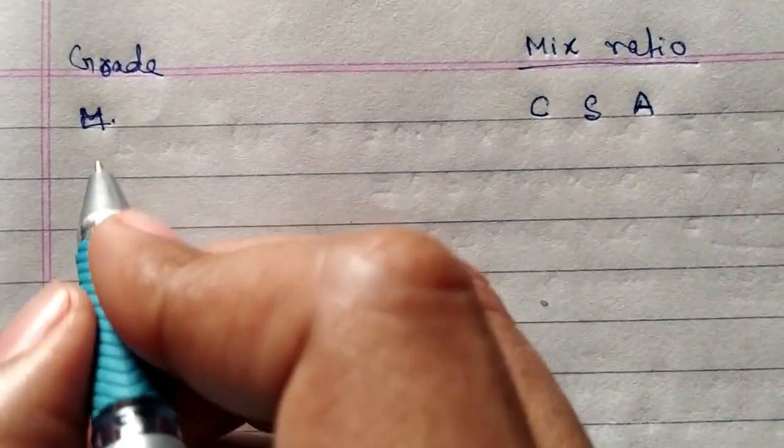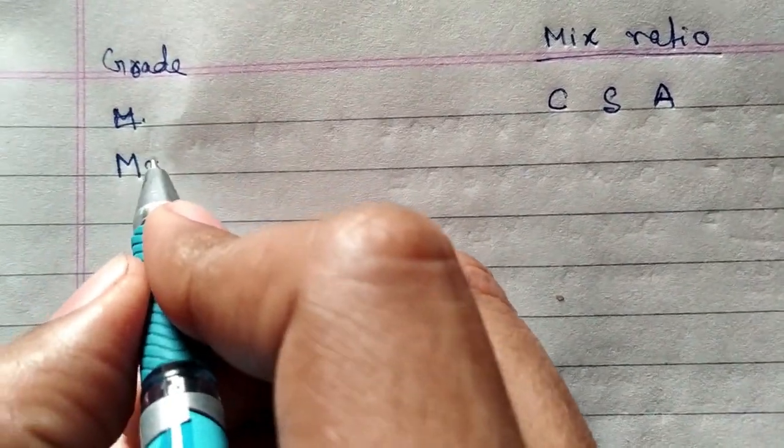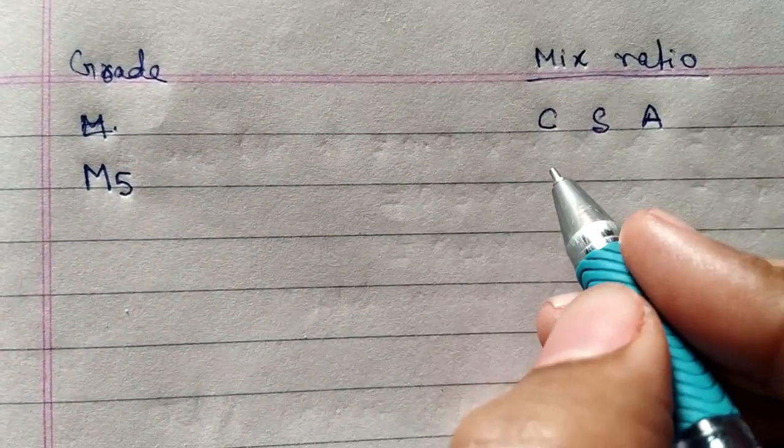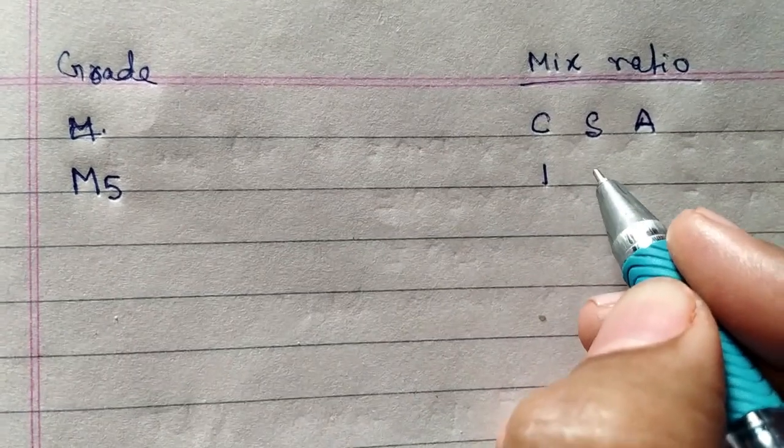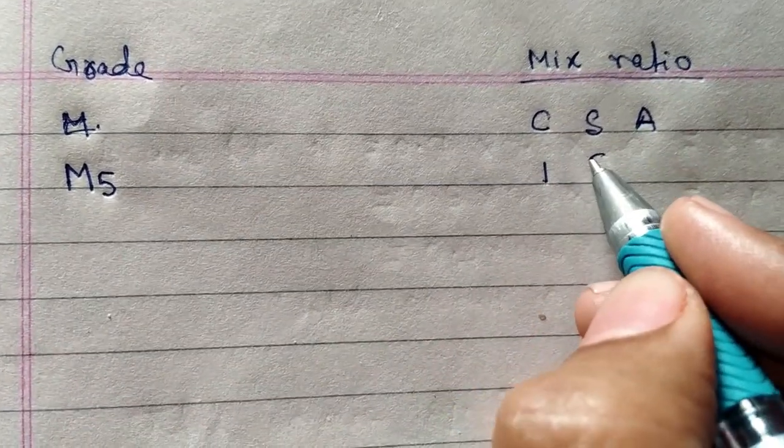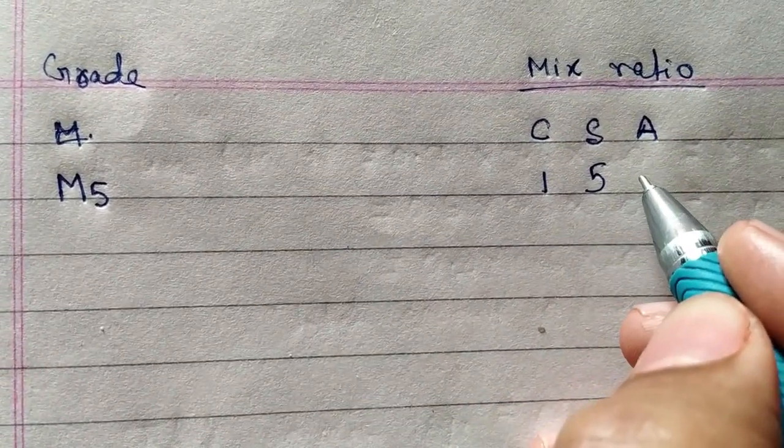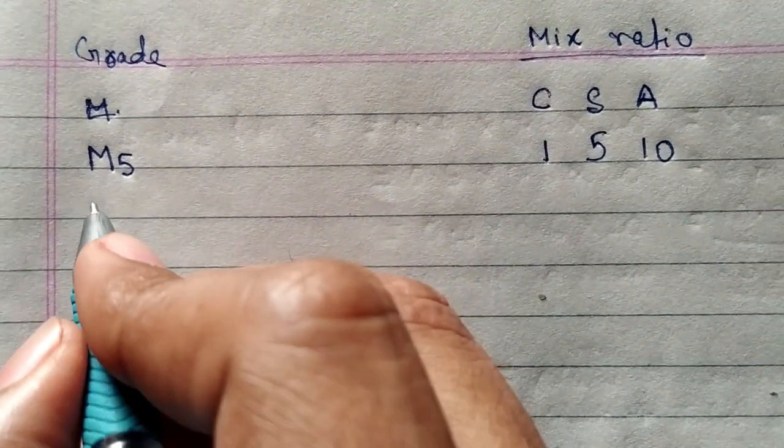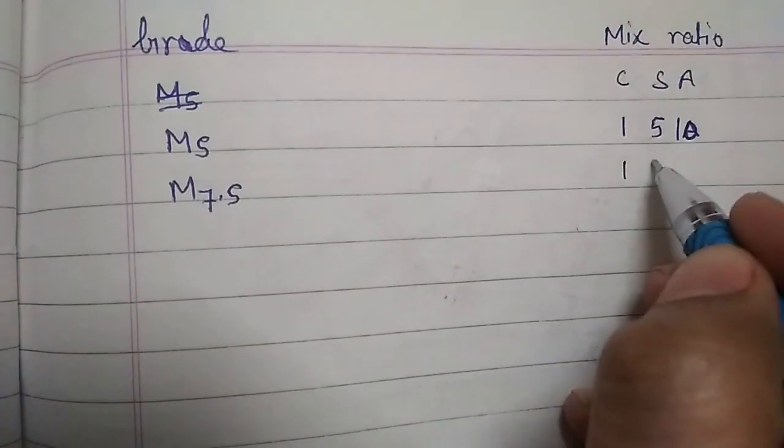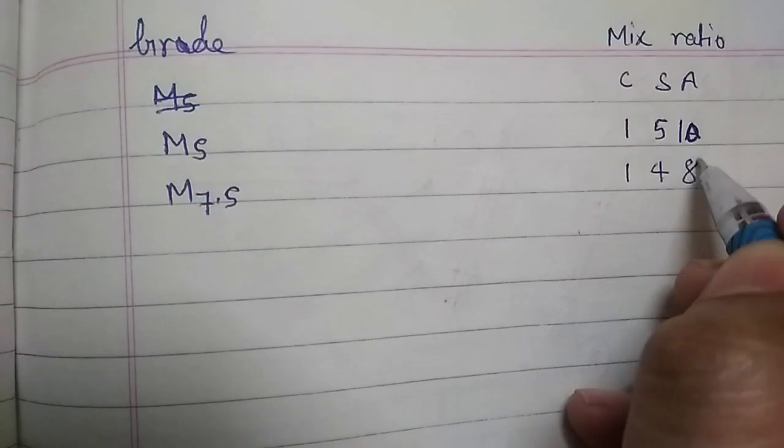So for M5, 1:5:10 - 1 cement, 5 sand, 10 aggregate. For M7.5, 1:4:8.